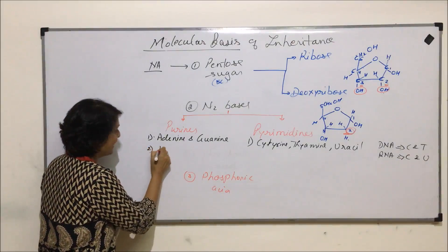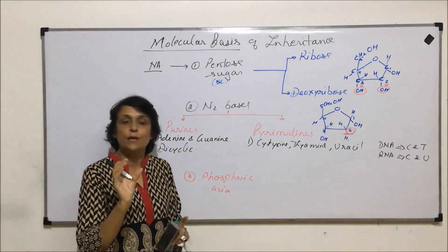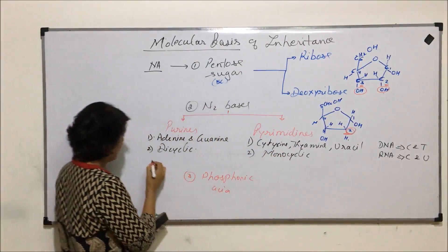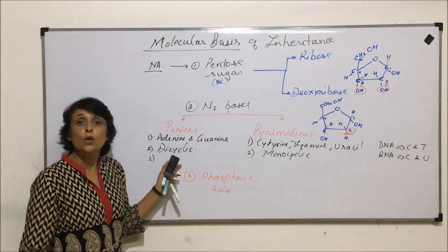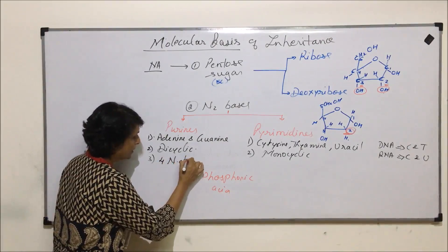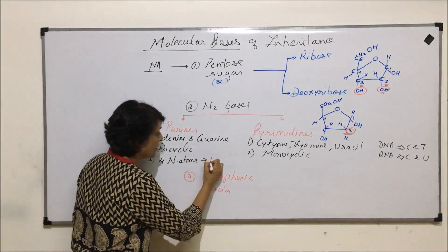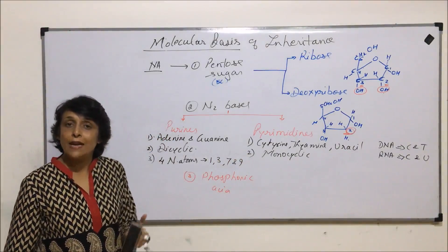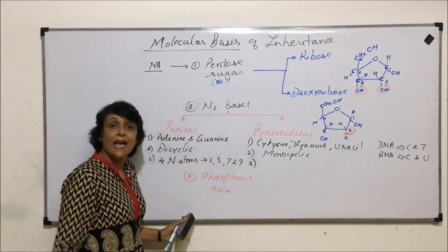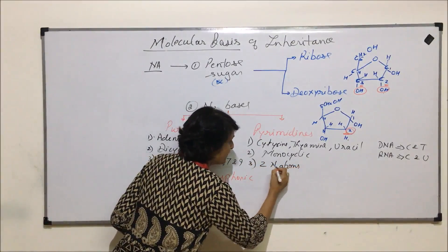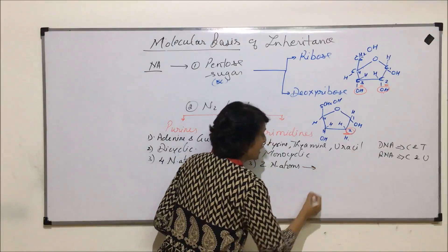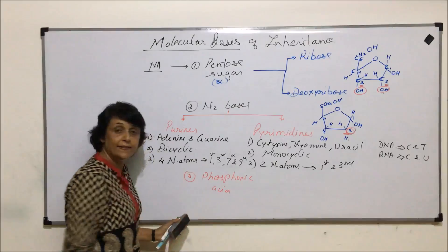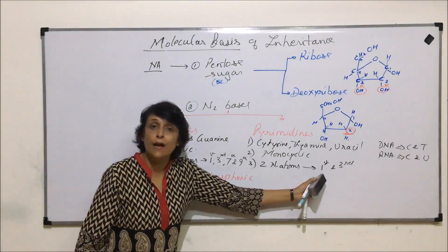Purines are dicyclic molecules — that means the molecule is made up of two cyclic compounds or rings — whereas pyrimidines are monocyclic. Purines have four nitrogen atoms and these atoms are at positions 1st, 3rd, 7th, and 9th. Pyrimidines have two nitrogen atoms, and these nitrogen atoms are present at positions 1st and 3rd.